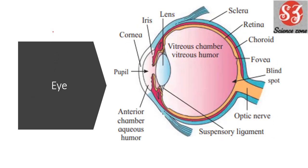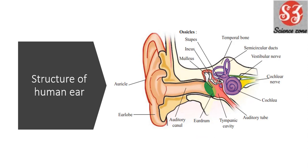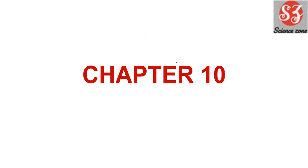Next is eye — this is an important diagram; 'draw neat labelled diagram of human eye' can be asked. Similarly, this is also important: 'draw neat labelled diagram of human ear' — so this is the diagram of the ear.